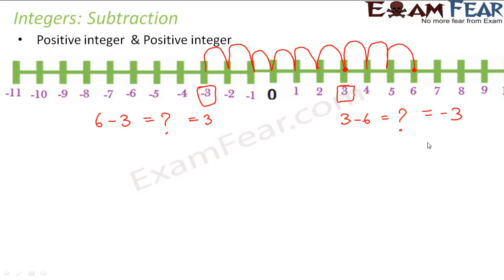So here we have very beautifully explained what we learnt in the previous slide — the subtraction logic. When you subtract a smaller number from a bigger number, the result is positive. When you subtract a bigger number from a smaller number, the result is negative. So that's very prominently proved here.